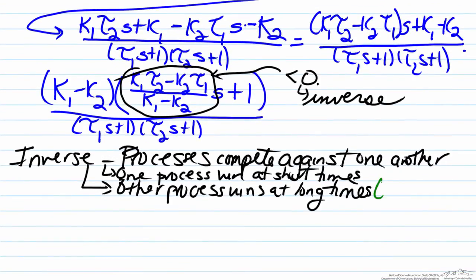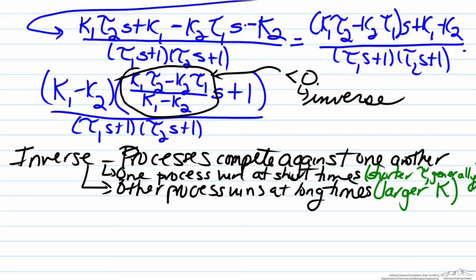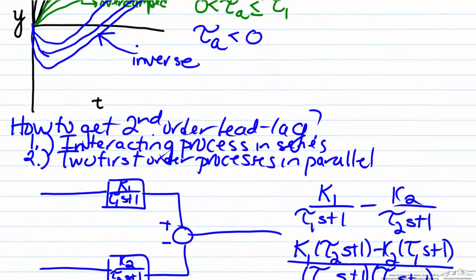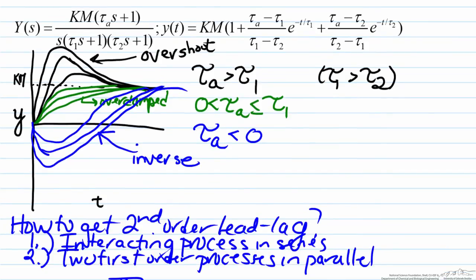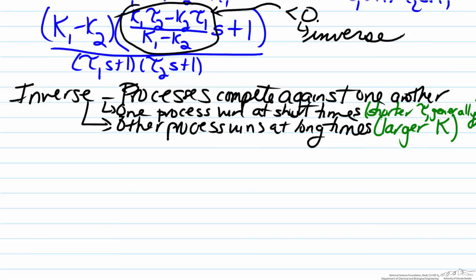At shorter times, the time constants have an influence — it's dictated by the process which responds quicker, so the shorter tau generally. We can see this in the definition of tau a, which takes into account the difference in gains in the denominator, but also the magnitude of the time constants, noting that the process gain of one function goes with the time constant of the other. If one process wins at both short and long times, the result won't be inverse — it will be either an overdamped response or one that shows overshoot.